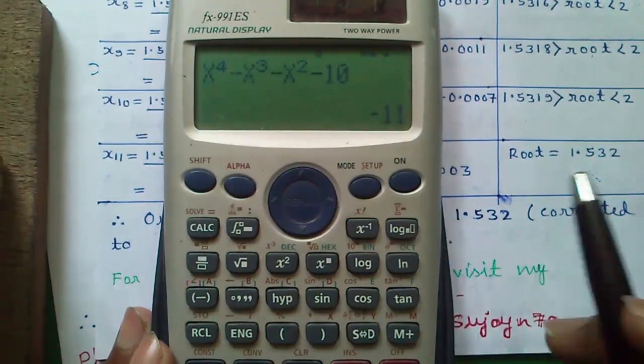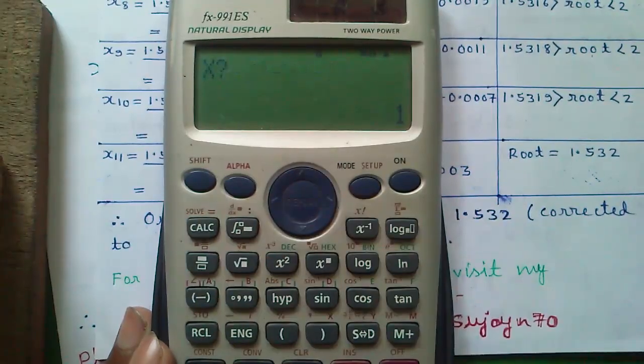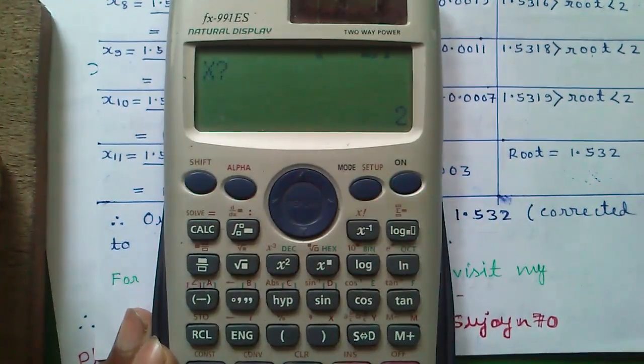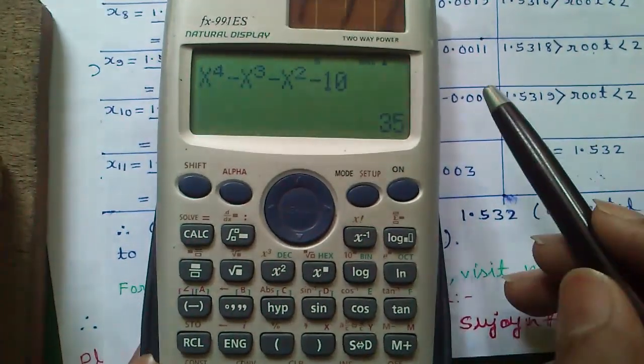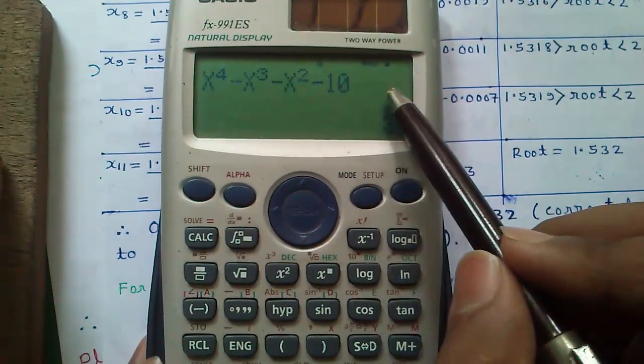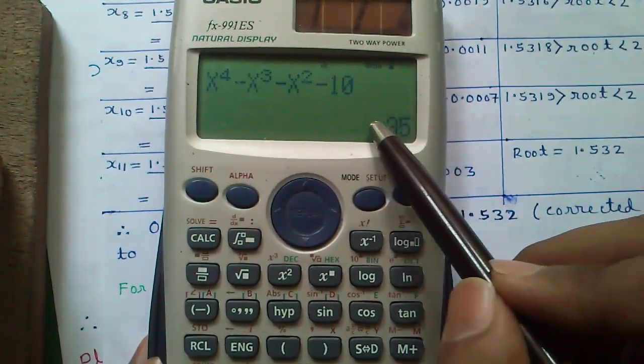So for x equals to 1 it will be minus 11. For x equals to 2 it is minus 6. And for x equals to 3 it is plus 35. Since our f of x changes sign between 2 and 3, our one root lies between 2 and 3.